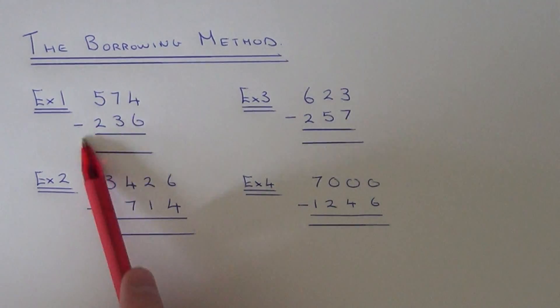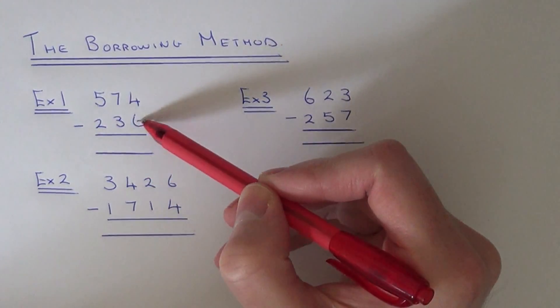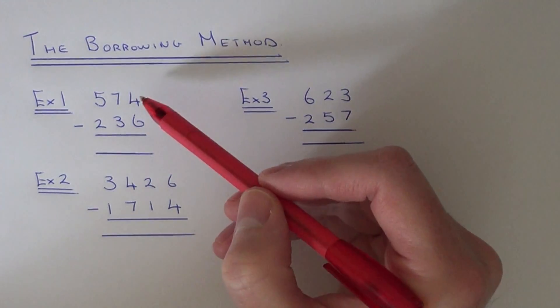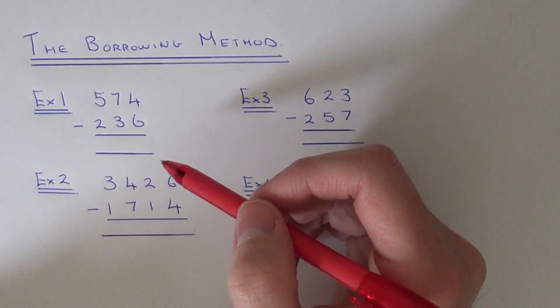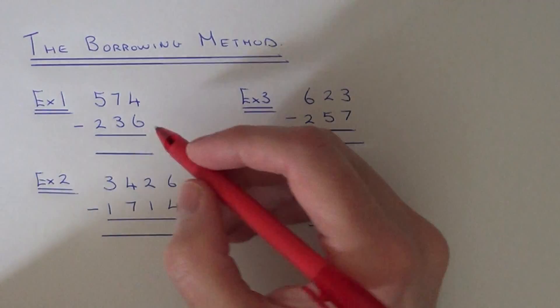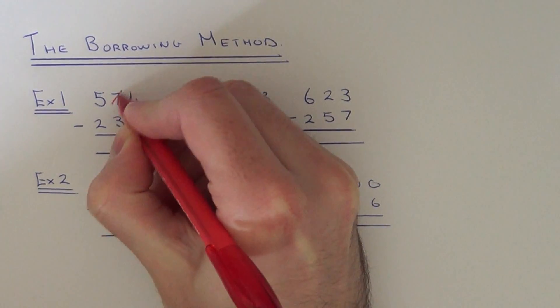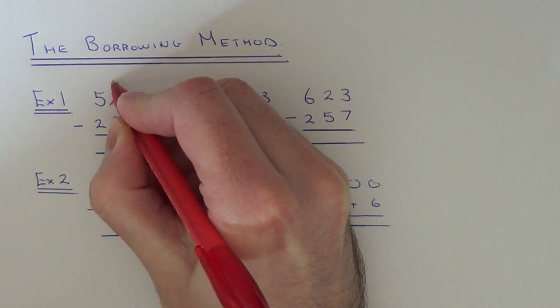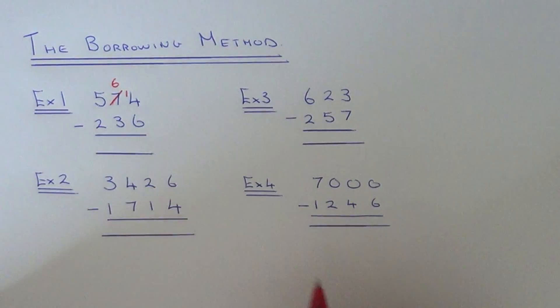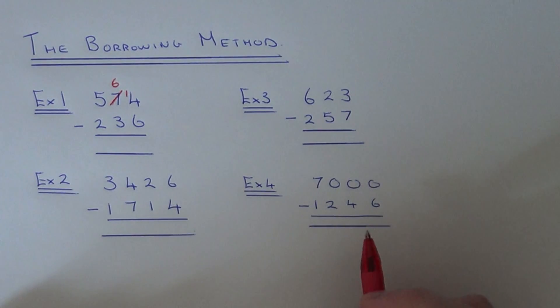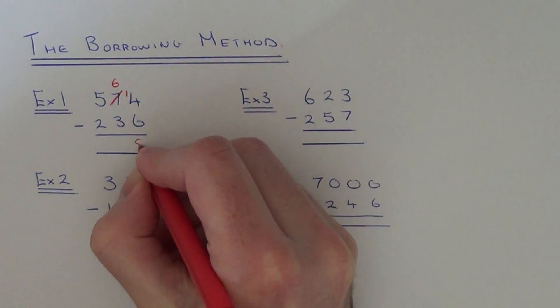Once you have lined up your numbers underneath each other, start on your right hand side and work out 4 take away 6. Well, if you do 4 take away 6, this will give you a negative number. With this method we don't want negative numbers. So what you need to do is go to the 7 next door, take 1 off the 7, make that a 6, and pass the 1 and put it in front of the 4 to make 14. So then you can work out 14 take away 6, which gives you 8.